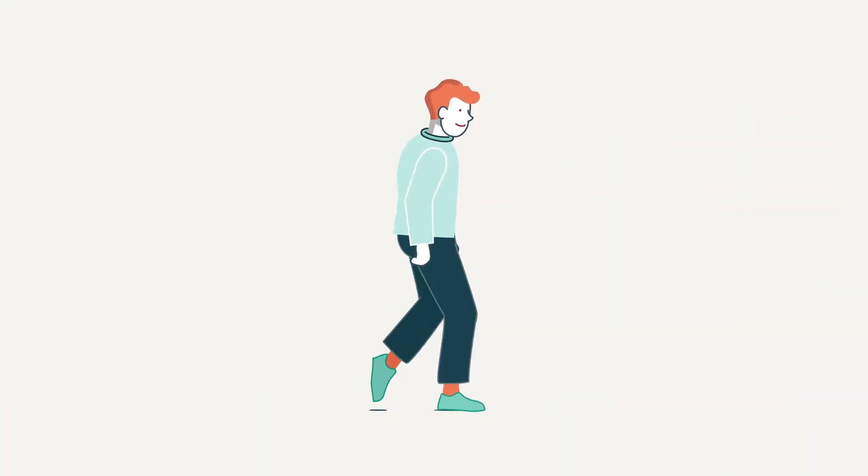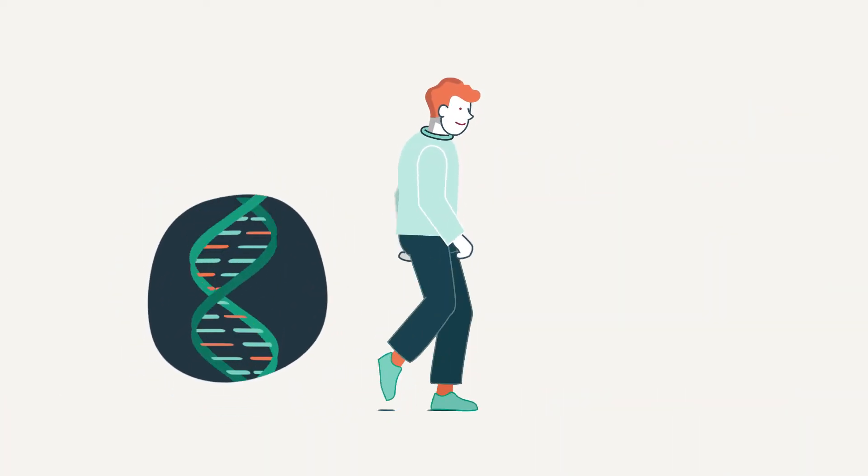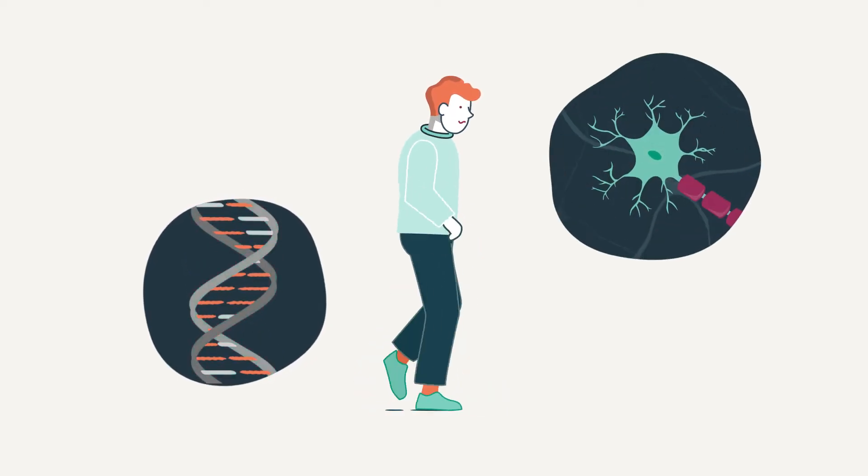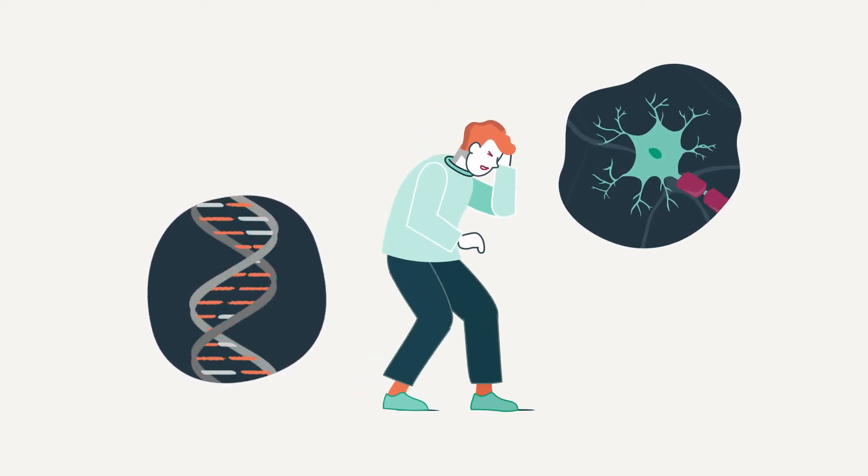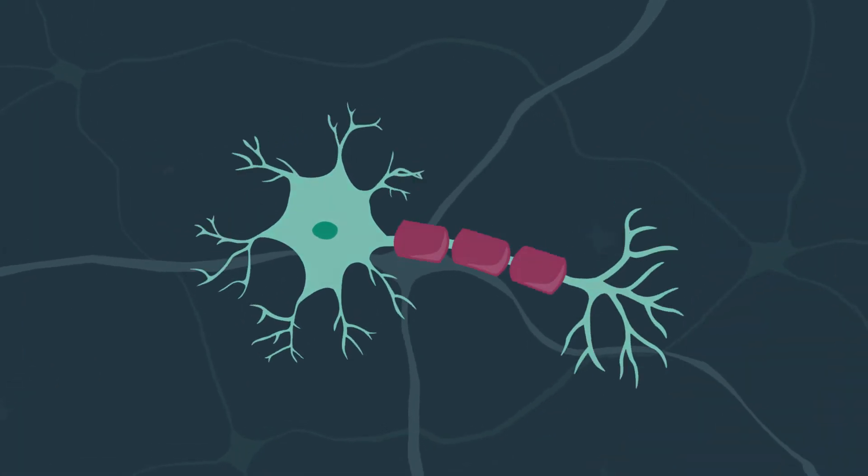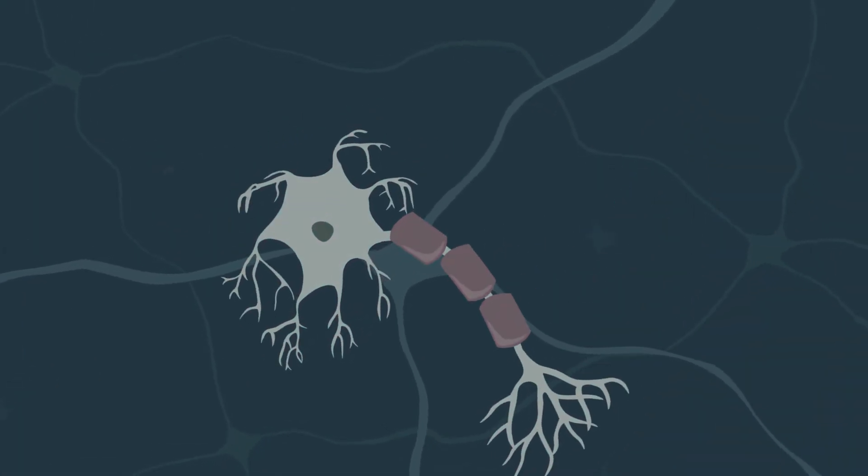The exact function of the HTT gene in healthy adults is not yet fully clear. But as an adult, the inherited mutation in the HTT gene leads to the production of toxic protein that causes the death of neurons in the brain.